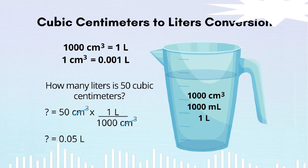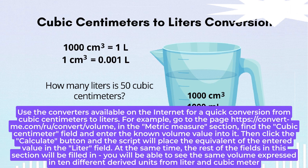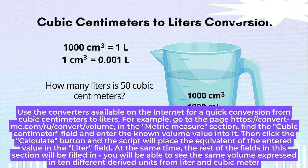Step 2. Use the converters available on the internet for a quick conversion from cubic centimeters to liters. For example, go to the page https://convert-me.com/ru/convert/volume in the metric measure section. Find the cubic centimeter field and enter the known volume value into it. Then click the calculate button and the script will place the equivalent of the entered value in the liter field.